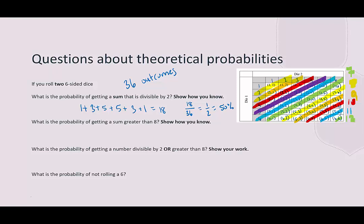What is the probability of getting a sum greater than eight? Sums greater than eight would be nine, ten, eleven, and twelve. Looking at the table: 4 ways to get 9, 3 ways for 10, 2 ways for 11, and 1 way for 12. Adding those gives ten. So there are ten possible ways the sum will be greater than eight. P(sum > 8) = 10/36, simplified to 5/18, which is approximately 0.278.